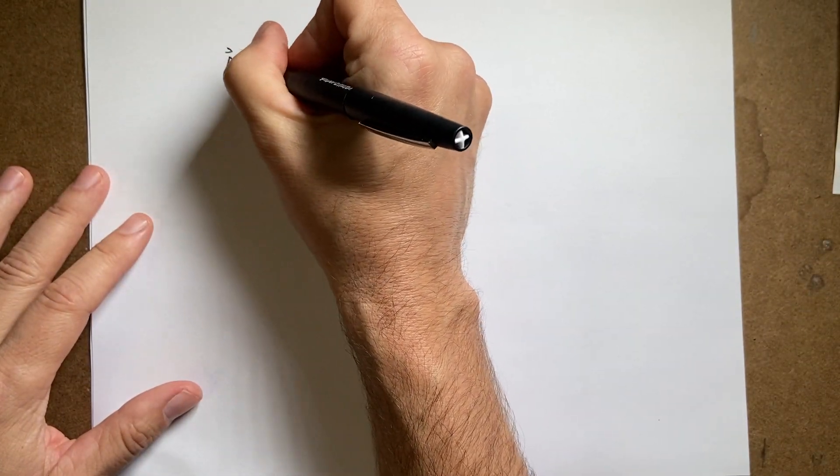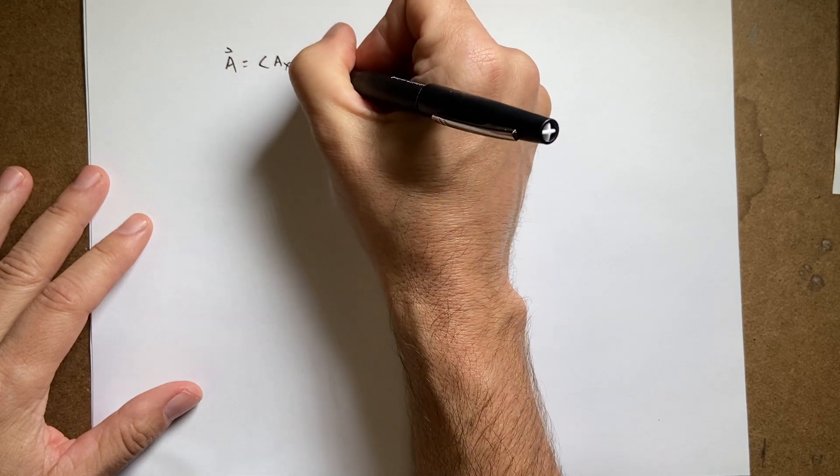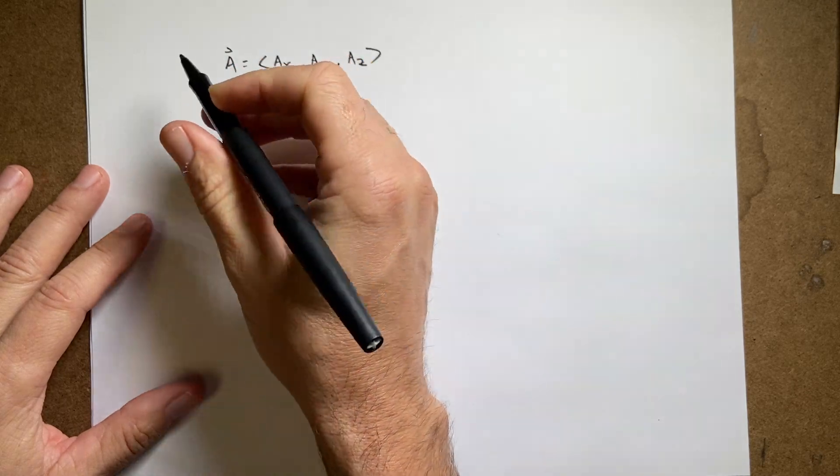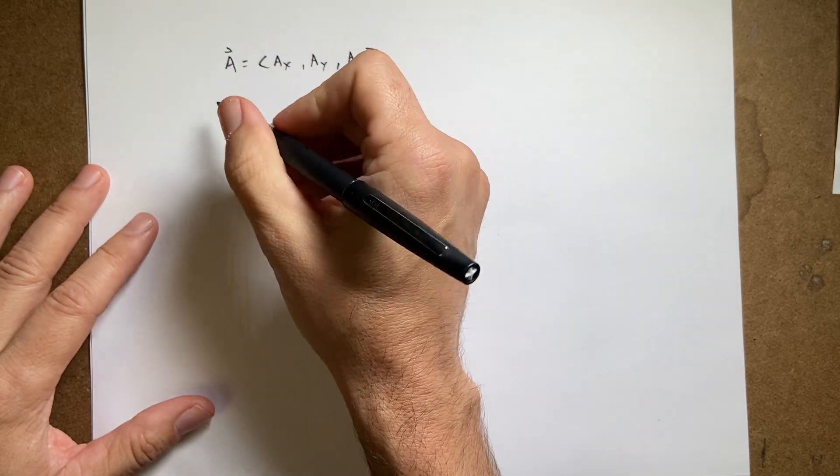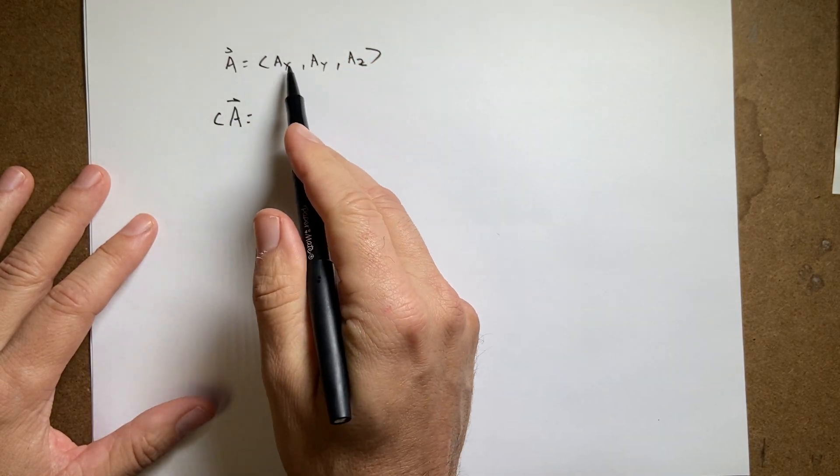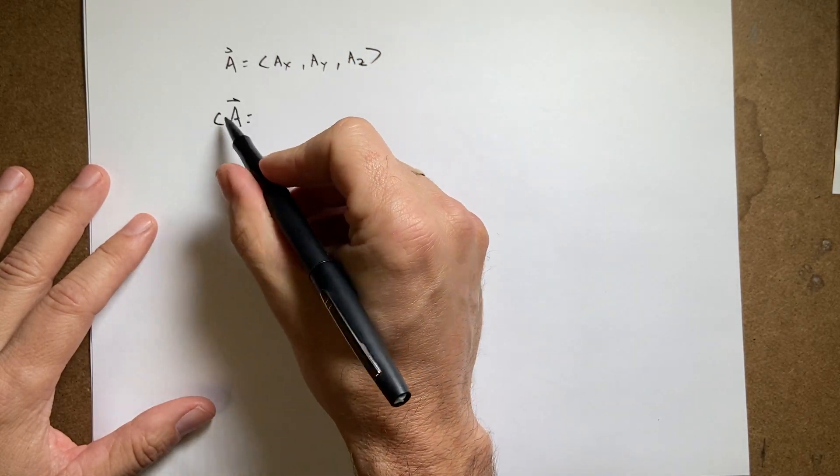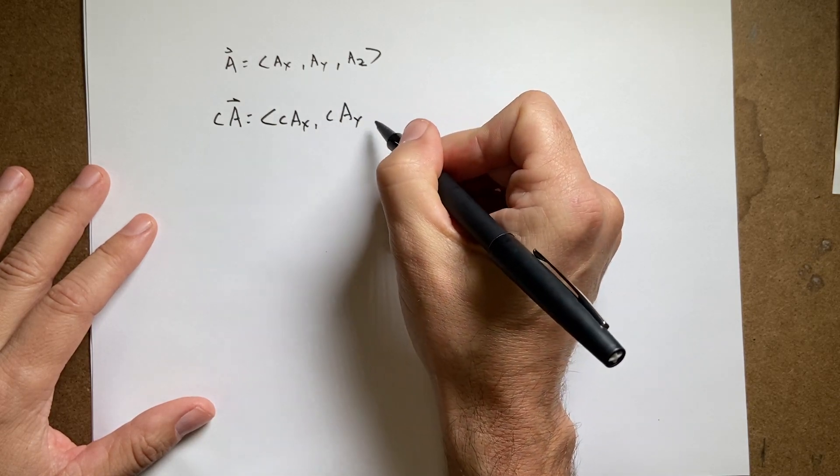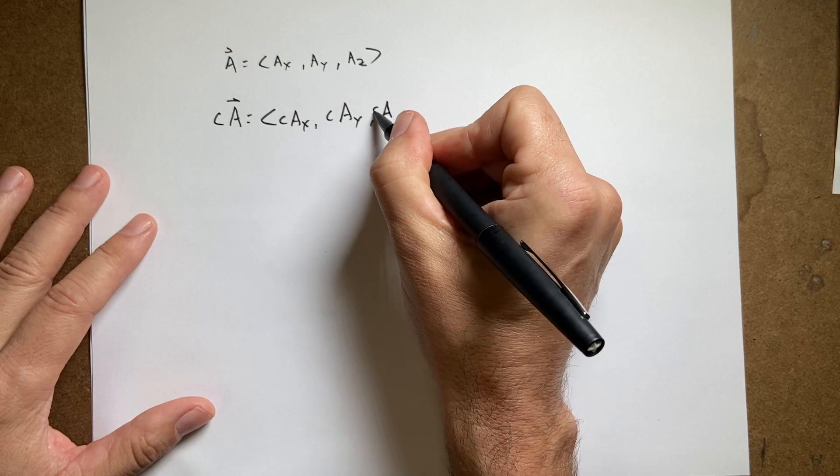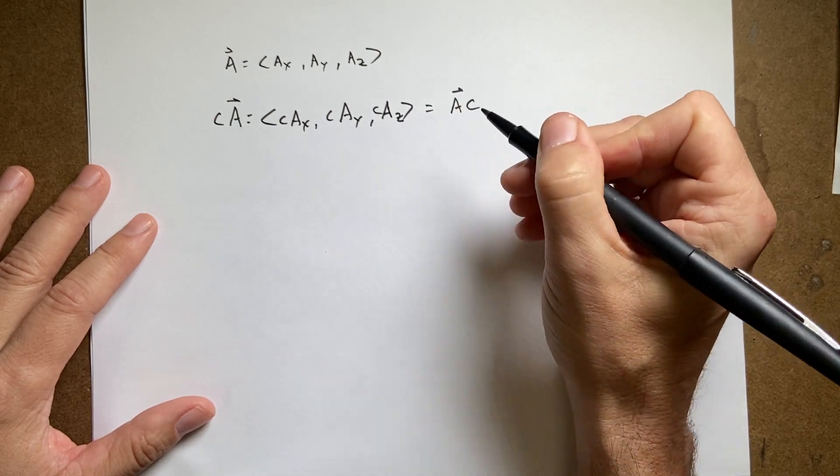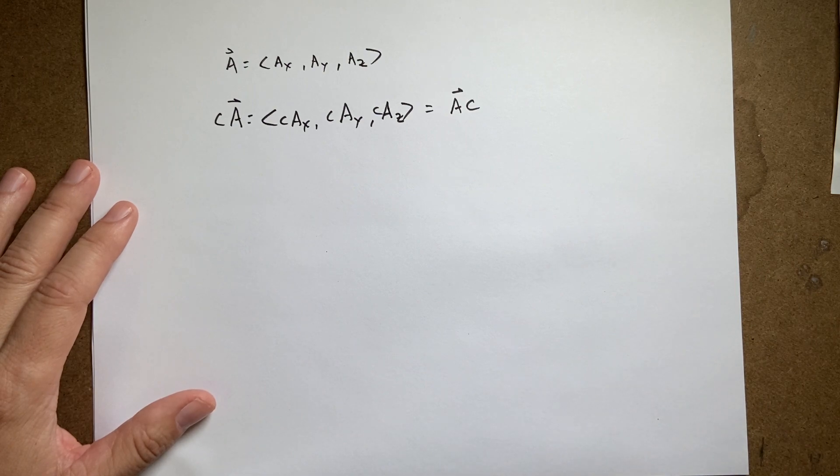Okay. Write my vector a, ax, ay, az. Now we have scalar multiplication, so let's say I multiply this by some scalar c. c times a, I just multiply the different components by that constant c. So I get c ax, c ay, c az. And this is equal to ac. Again, the order doesn't matter.